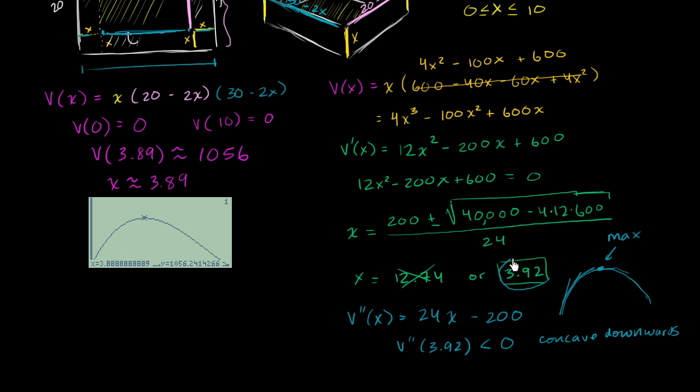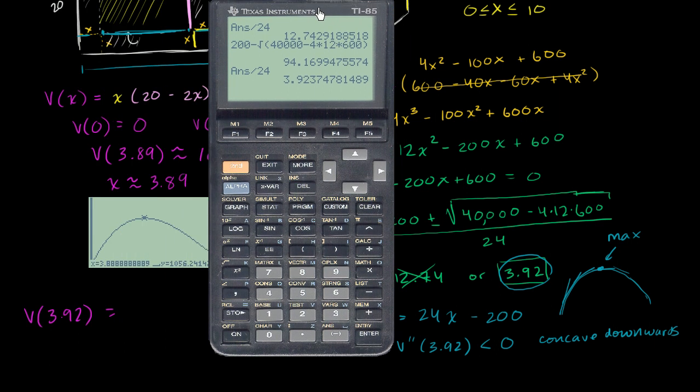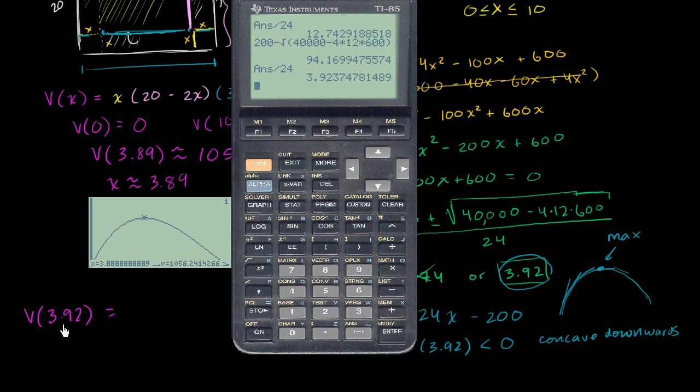So this is the x value at which our function attains our maximum. Now, what is that maximum value? Well, we could type that back into our original expression for volume to figure what that is. So let's figure out what the volume when we get to 3.92 is equal to - what is our maximum volume.